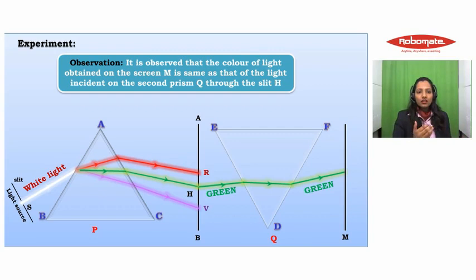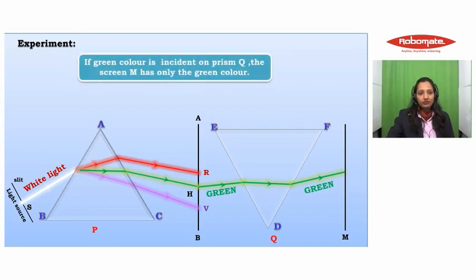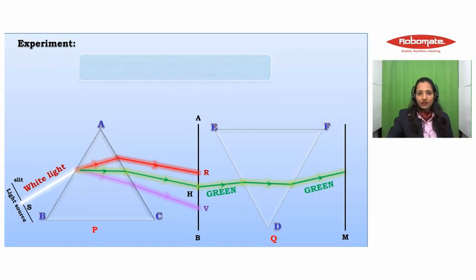It shouldn't be mistaken that if green light is falling on the face of the prism, then it's going to spread out in the spectrum again. If out of the seven constituent colors only one color is made incident on the prism, only that color will be produced out again. If green color is incident on prism Q, the screen M has only green color. This proves that the prism itself does not produce any color.